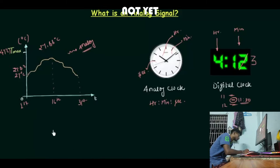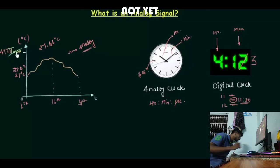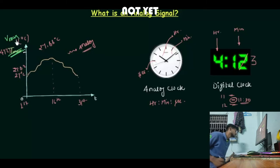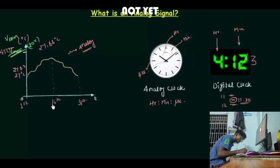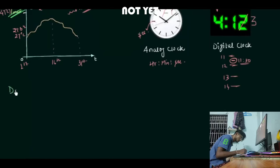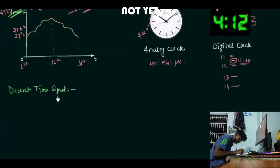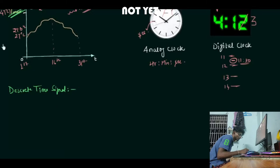So an analog signal can take any value within the given limit. Now, in the context of digital electronics, let's replace Tmax with Vmax (voltage). If Vmax is 20 volts, the signal can take any value between 0 and 20 volts — that is an analog signal. Now we move to the next type: the discrete time signal, which is important to understand before we get to the digital signal. The signal defined only for discrete intervals of time is called a discrete time signal.